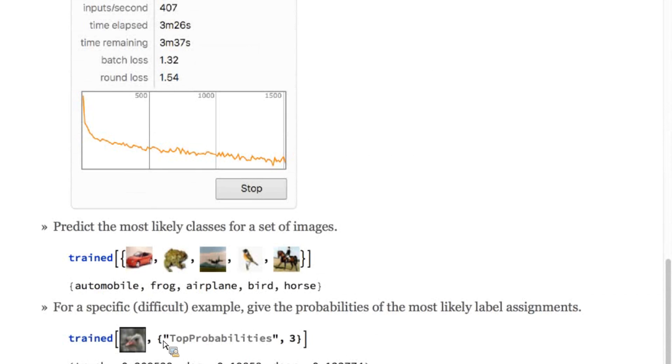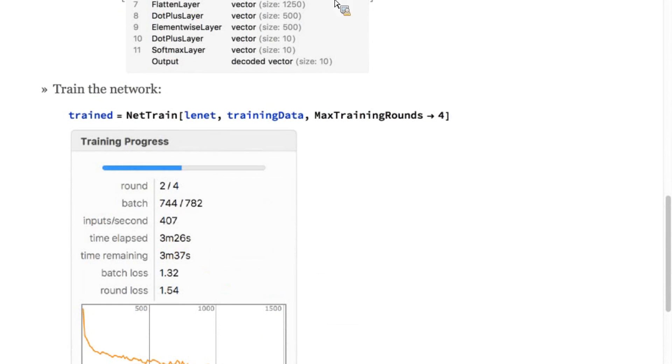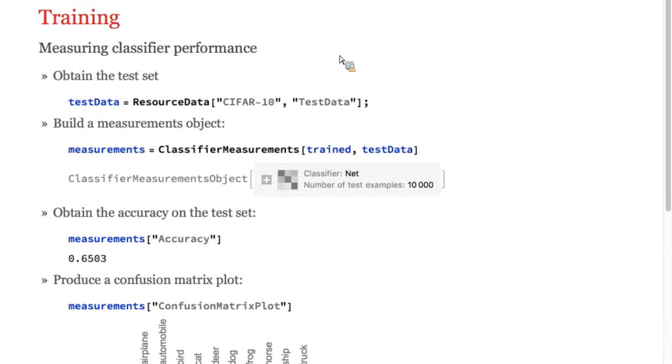And lastly, we'll use a property of the final decoder to obtain something more interesting for a particular image, not the most likely class, but the probabilities of the top three classes. In this case, it did a terrible job. It thought that ostrich was either a truck, a dog, or a deer.